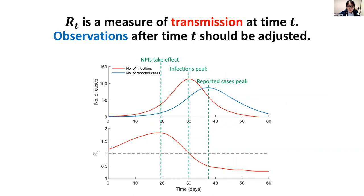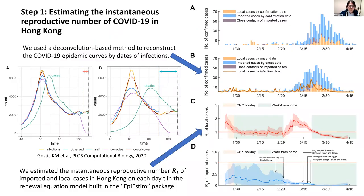Now we have a good mobility index for Hong Kong, but how can we correlate RT and the mobility level using the octopus data? First, we estimate RT in Hong Kong. On the right hand side, you can see the epidemic curve of the first and second waves by date of confirmation, and the second graph shows the epidemic curve by date of symptom onset. As discussed, there's always a delay of about 10 days between infection and reporting.